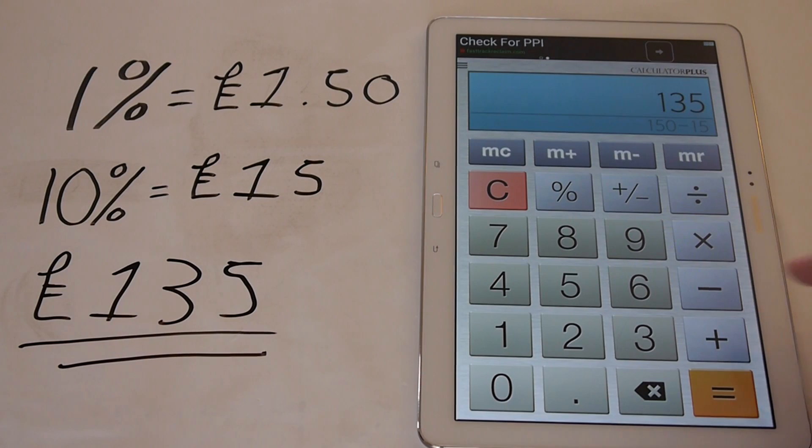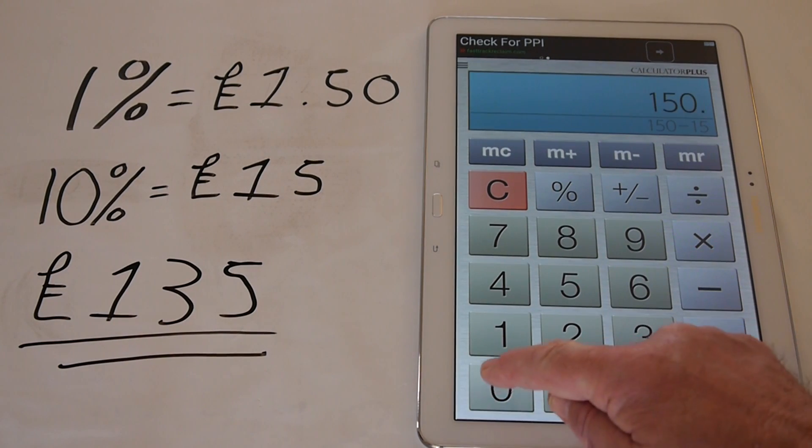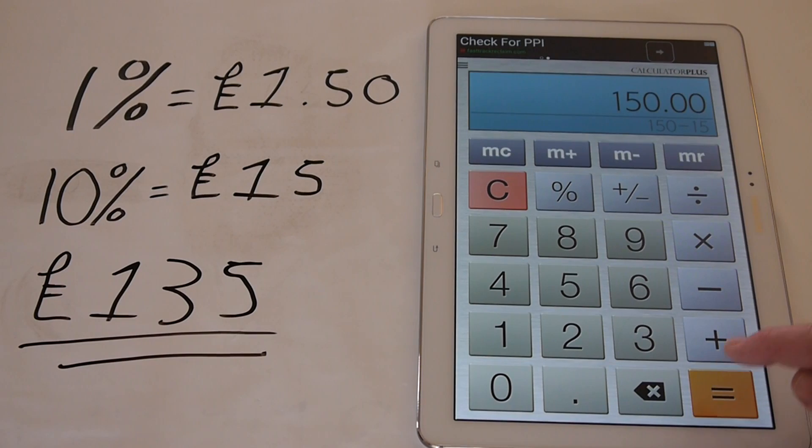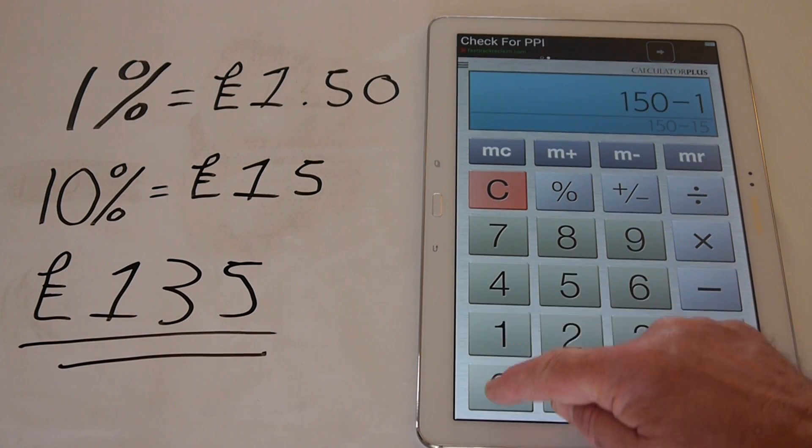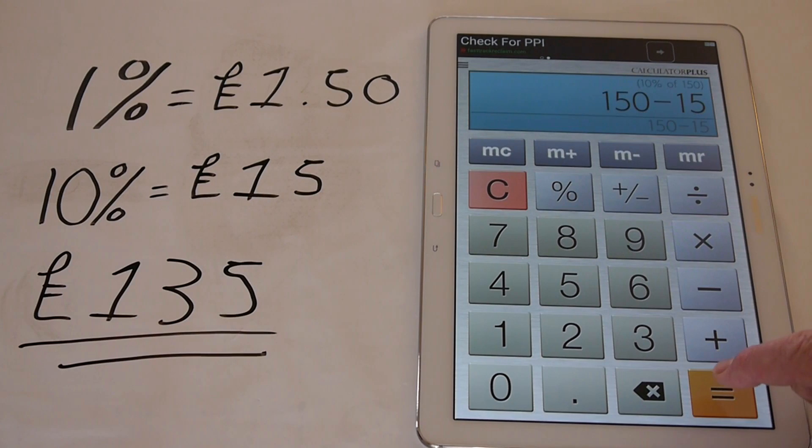Another quick way to do it would be, depending on the type of calculator you have, is 150, minus 10, press the percent button, equals 135 pounds.